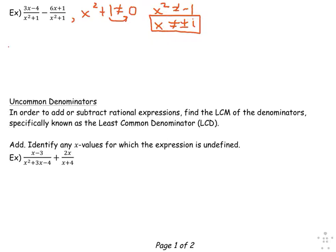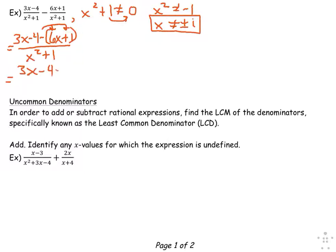I continue with the original difference of rational expressions. The denominators are already the same, so I make them common between the two and then subtract numerators. Notice I use parentheses around the second fraction's numerator because I must distribute the negative sign like a negative 1 to each term to the right of the subtraction. So I have 3x minus 4 minus 6x minus 1, noting that all the signs changed. Combining like terms: negative 3x minus 5 all over x squared plus 1.